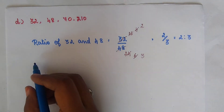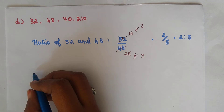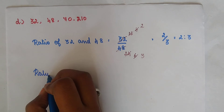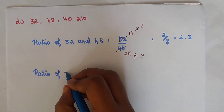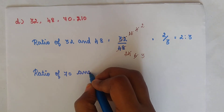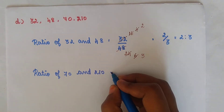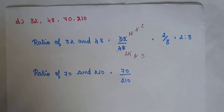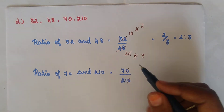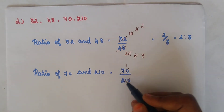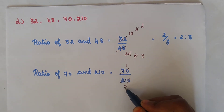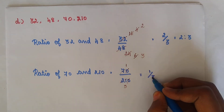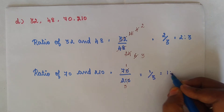Next, we find the ratio of 70 and 210. We write 70 divided by 210. Cancelling the zeros, then dividing by 7: 1 seven is 7, 3 sevens are 21. So we get 1 divided by 3, that is 1 is to 3.